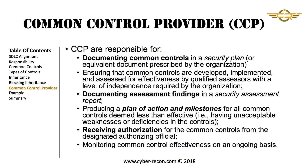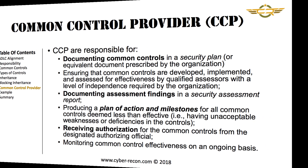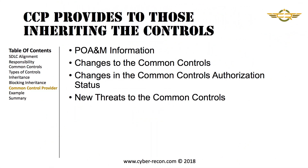Common Control Providers are much like Information System Owners in the way they process their controls through the Risk Management Framework. CCPs should provide key documents to Information System Owners that are inheriting controls. These documents include the plan of action and milestones, changes to the Common Controls, changes to the Common Controls' authorization status, and new threats to the Common Controls. This information should be provided on an ongoing basis.